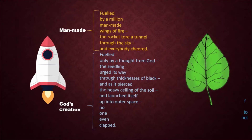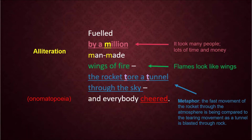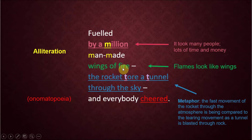Let's have a closer look at the first section — the man-made section. 'Fuelled by a million man-made wings of fire.' There is alliteration here of the 'm' sound, and the word 'million' tells us that it required a great deal of people to let this rocket finally take off — from its inception with the design, the resources, the engineers, the building, the welding, etc. 'Man-made' obviously emphasises it's got nothing to do with God. 'Wings of fire' — the flames coming out of the rocket look a bit like wings, and the smoke rising up is also said to look like wings. That's the image the poet has tried to create in our minds.